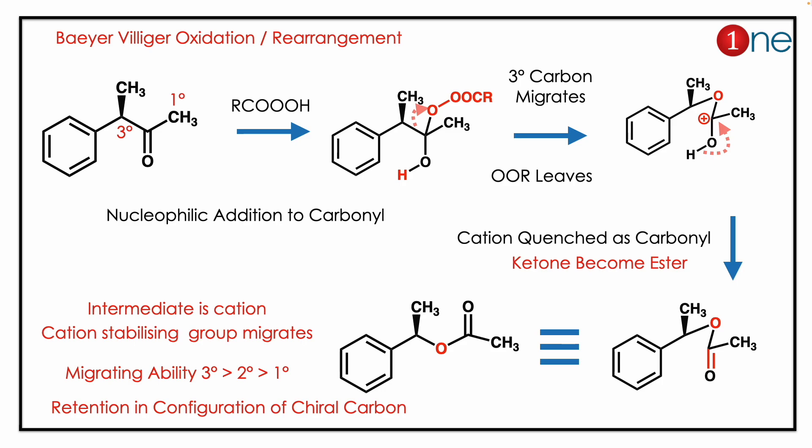O-O bonds are weaker and act as a good leaving group. So what really happens: the carbon migrates, you have a cation near the alcohol. The cation is quenched as a carbonyl — you end up with an ester. So you start from a ketone and end with an ester.